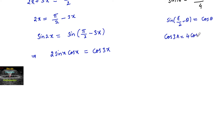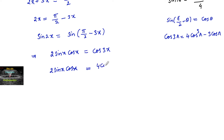The cos(3a) formula is 4cos³a - 3cos a. So we can write 2 sin x cos x = 4cos³x - 3cos x.